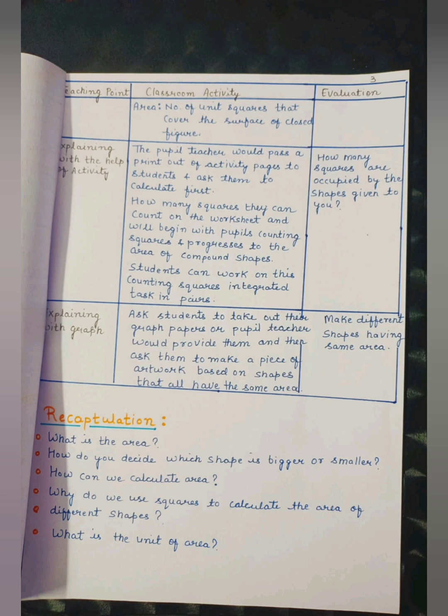The teacher would pass a print out of the activity pages to students and ask them to calculate first how many squares they can count on the worksheet, and will begin with counting squares and progress to the area of compound shapes. Students can work on this counting squares integrated tasks in pairs. How many squares are occupied by the shapes given to you?